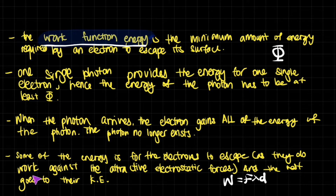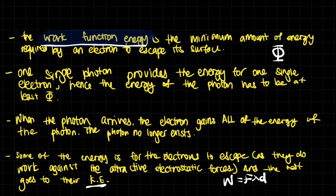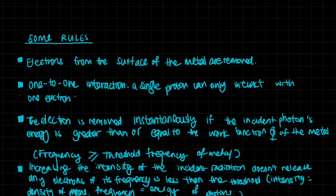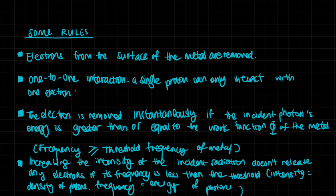The rest of the energy, if the photon has excess beyond the work function, goes to the electron's kinetic energy. For example, gamma rays have a much higher frequency than ultraviolet rays — if you shone gamma rays onto the zinc plate, electrons would have much higher kinetic energy. The frequency of incident light affects the kinetic energy of emitted electrons and therefore the resulting current. One rule is that only electrons from the surface of the metal are removed, as light may not penetrate deeply.